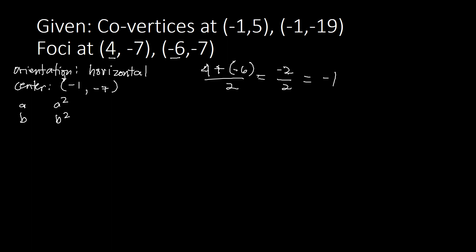Since we don't have vertices, we can't find A yet. We find B using the co-vertices. From center (−1, −7) to co-vertex (−1, 5), the X values are the same, so we focus on Y: −7 minus 5 equals −12. Dropping the negative, B equals 12, so B squared equals 144.